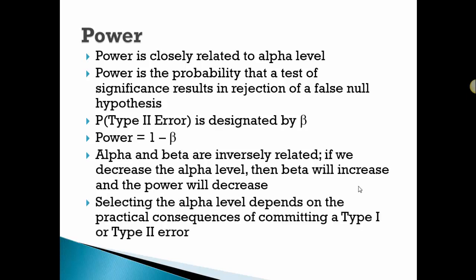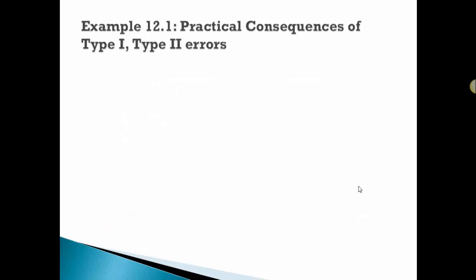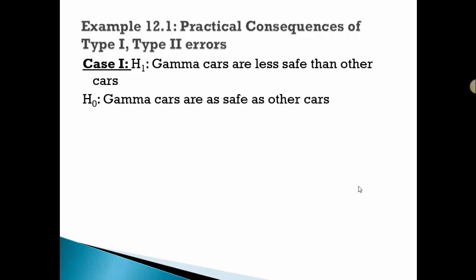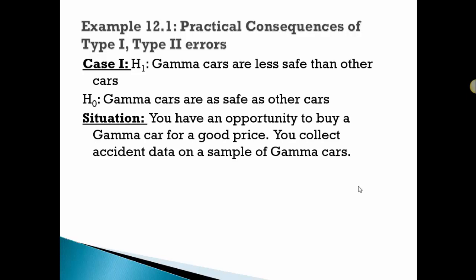Selecting the alpha level depends on the consequences of what's more critical to committing a Type I or a Type II error. Your book has a nice example to try to illustrate this. The research hypothesis in this case is that gamma cars are less safe than other cars, and the null is that they're as safe as other cars. You have an opportunity to buy a gamma car for a good price. You collect accident data.